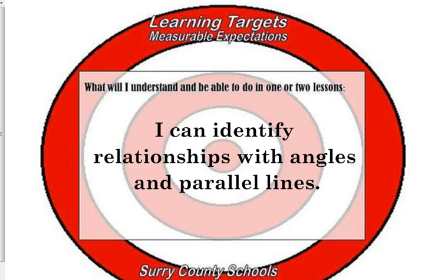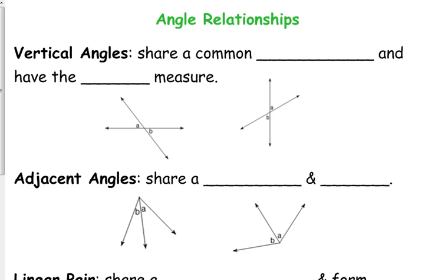We'll talk about parallel lines later. First, on your paper, we're going to fill in the blank. Vertical angles. We need to understand the concept of vertical angles. Vertical angles share a common vertex — they meet at a point right in the middle. A and B on both of these diagrams share that point right there in the middle where those two lines intersect.